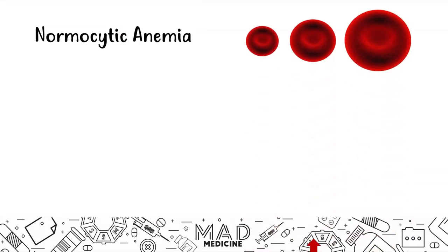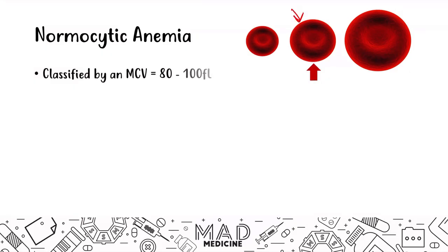Let's talk about normocytic anemia. The red blood cell is going to be normal and it is classified by an MCV that is going to be 80 to 100. This is a normal mean corpuscular volume for a red blood cell, so we are classifying this as normocytic anemia.